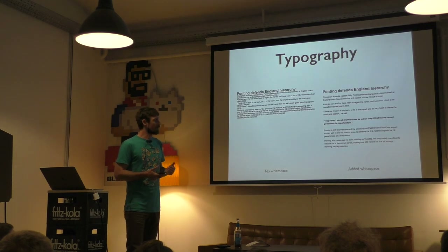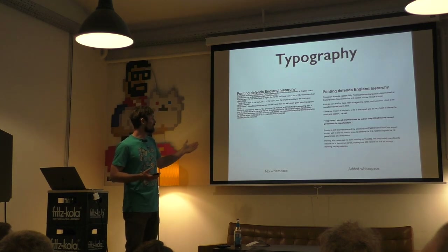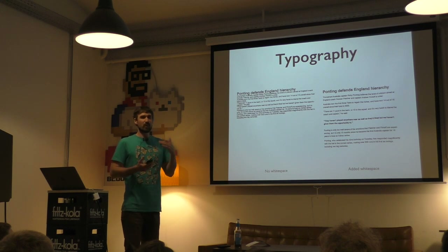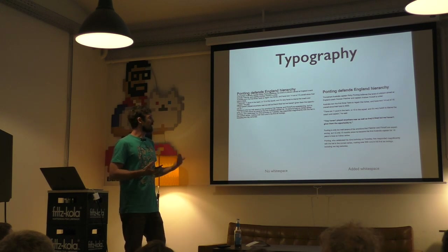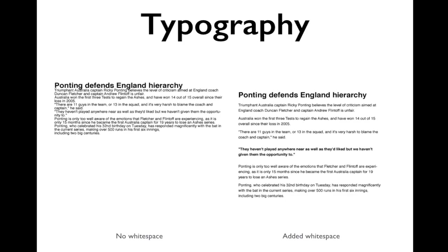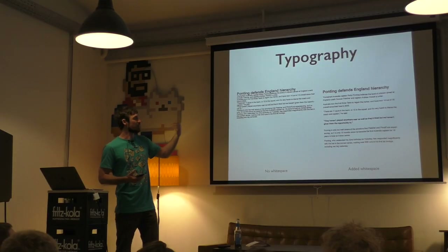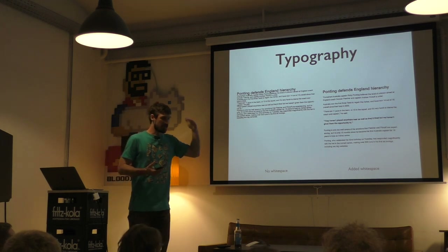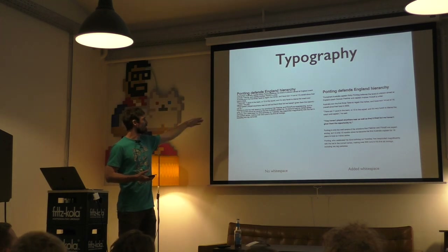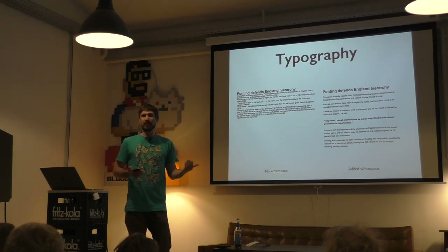Why is it important? Take typography. If you think of spacing, white space, and all the parameters typography has — if you look at two examples, it's clear one is more legible because it has white space. White space is good, and consistent white space is even more important because it establishes a rhythm so you can easily scan the text. Without that rhythm, it's hard to read.